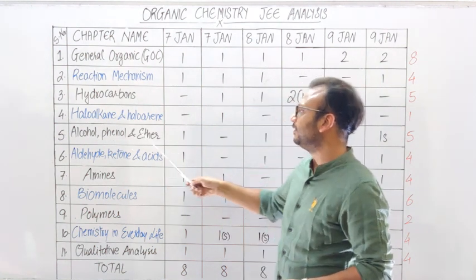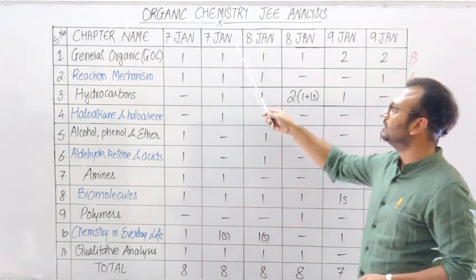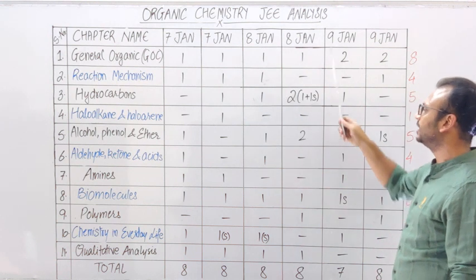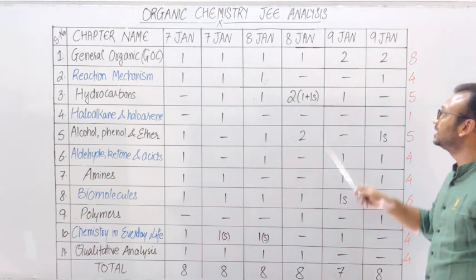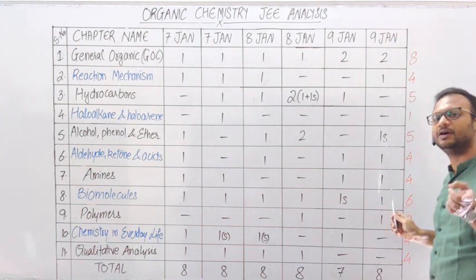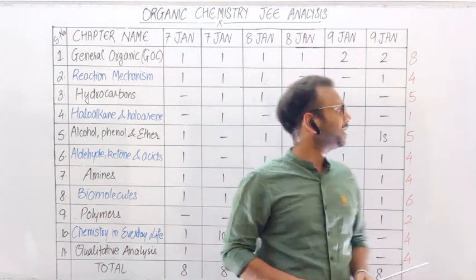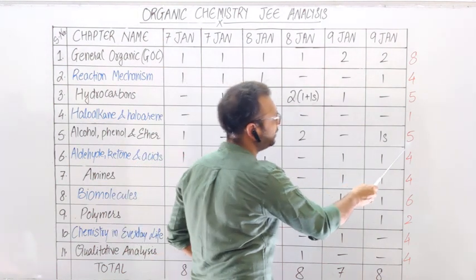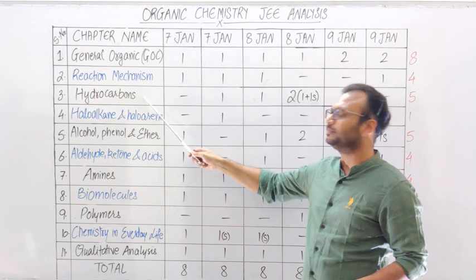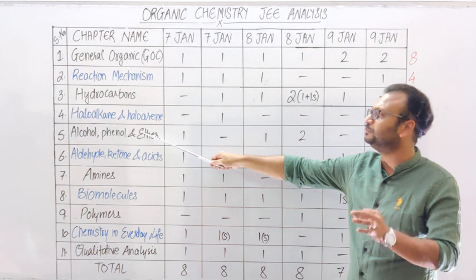फिर आता है Alcohol, Phenol और Ether। 7th January Morning और Evening Shift में कोई question नहीं था, 8th January Morning Shift में 1 question, Evening Shift में 2 questions, 9th January Morning Shift में कोई question नहीं था, Evening Shift में 1 question था जो numerical type का था। Total 5 questions, यानि जितना important Hydrocarbon है, उतना ही important Alcohol, Phenol और Ether भी है।